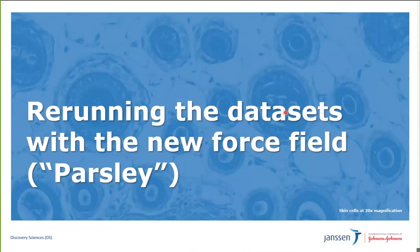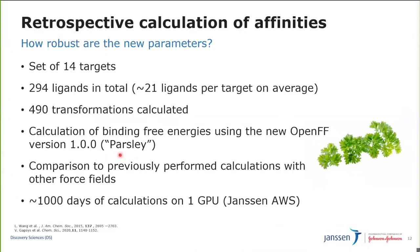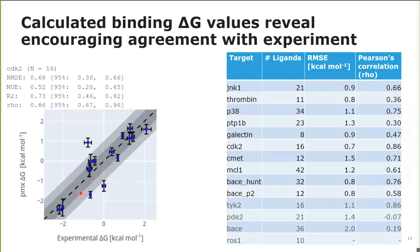I used this dataset to rerun free energy calculations with the new Open Force Field parameters, Parsley 1.0.0. I have run calculations on 14 targets with about 300 ligands in total and 500 perturbations or transformations. This is approximately 1,000 days of calculations on one GPU using the Janssen AWS server. The first results reveal that we agree with experiment quite well in many cases, with an RMSE lower than one, sometimes a bit higher, and also quite nice correlations. Some gray targets have edges not yet run, so the data is not yet complete.